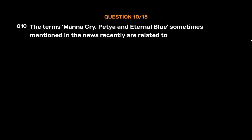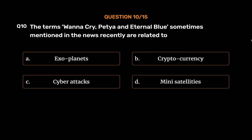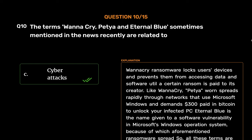Question No. 10. The terms WannaCry, Petya and Eternal Blue, sometimes mentioned in the news recently, are related to: Option A: Exoplanets. Option B: Cryptocurrency. Option C: Cyberattacks. Option D: Mini Satellites. The correct answer is Option C: Cyberattacks. WannaCry ransomware locks users' devices and prevents them from accessing data and software until a certain ransom is paid to its creator. Like WannaCry, Petya spreads rapidly through networks using Microsoft Windows and demands $300 paid in Bitcoin to unlock infected PCs. Eternal Blue is a software vulnerability in Microsoft's Windows operating system through which the aforementioned ransomware spreads. All these terms are related to cyber security.